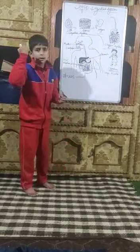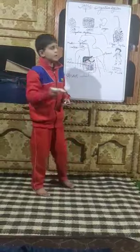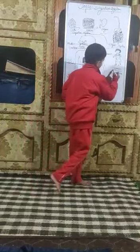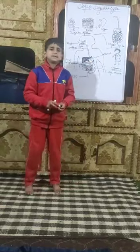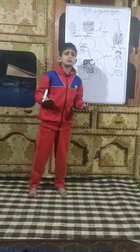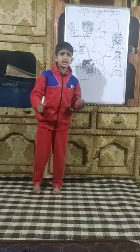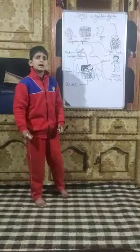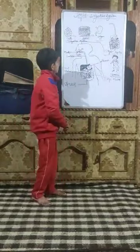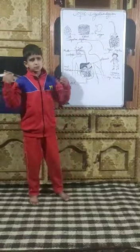Organ systems join together to form organisms like human beings and animals. Our body has many systems like skeleton system, muscular system, digestive system, respiratory system, nervous system, excretory system and reproductive system. Today my topic is digestive system.